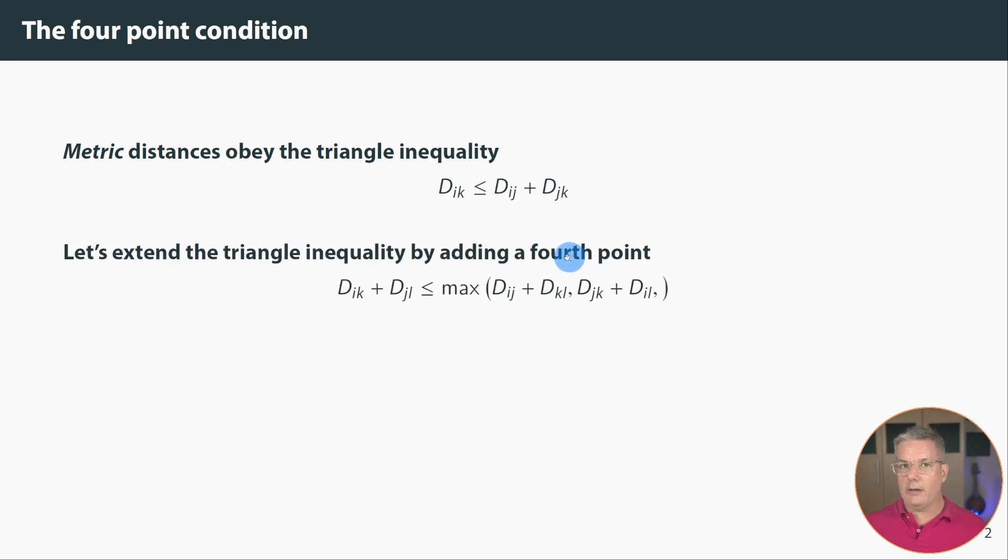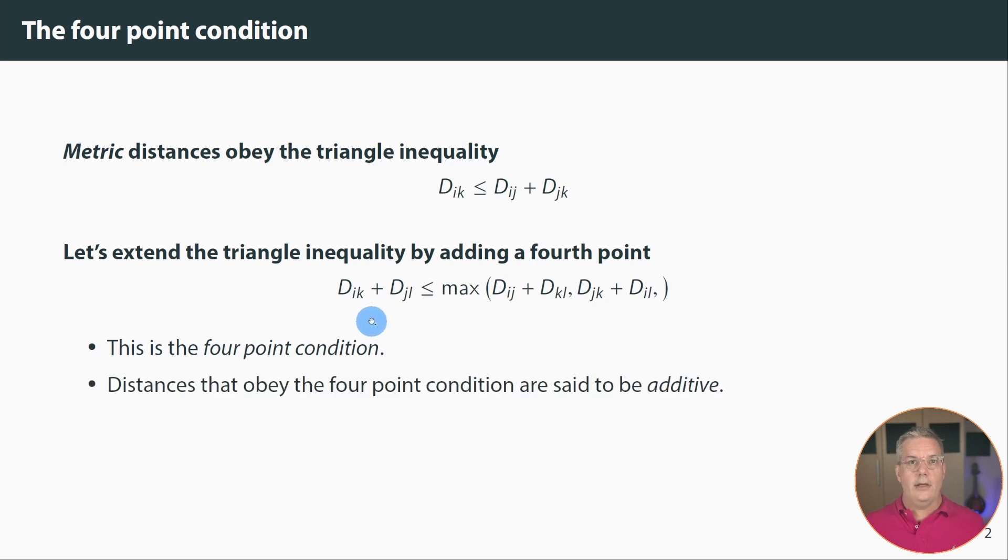Let's add another point L to that and now we'll get an inequality that looks like this, where d sub ik plus d sub jl is less than or equal to the max of these two sums. This is referred to as the four-point condition because there are four points and it does in fact extend the triangle inequality. Distances that obey the four-point condition are said to be additive. So these are additive distances and you can check that this does in fact extend the triangle inequality by just setting j equal to L.